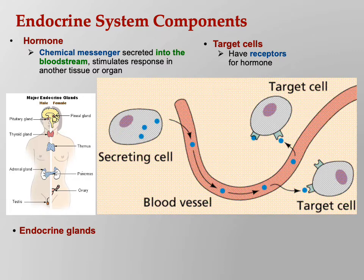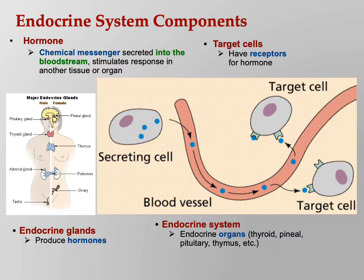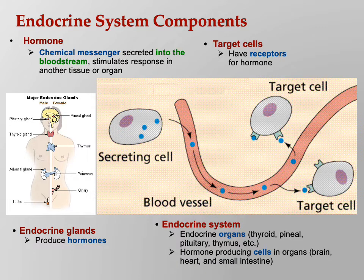Endocrine glands are the structures that contain endocrine cells that secrete the hormones — they produce the hormones. The endocrine system is basically all of this together, all of the endocrine organs. There are also hormone-producing cells in other organs: the brain, the heart, the small intestines. In the atria, we released ANP, a hormone — there are endocrine cells in the atria that release ANP. So try to get these basic definitions solid in your head; that will help you avoid making mistakes later.